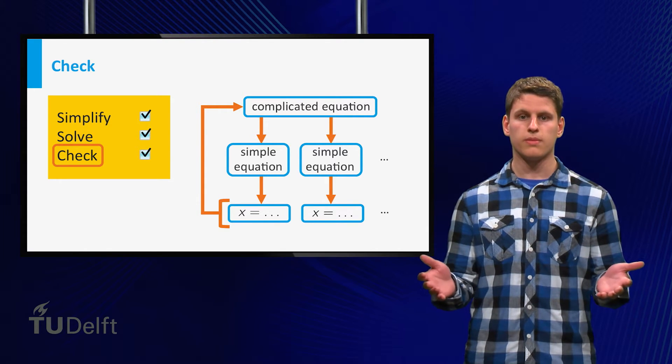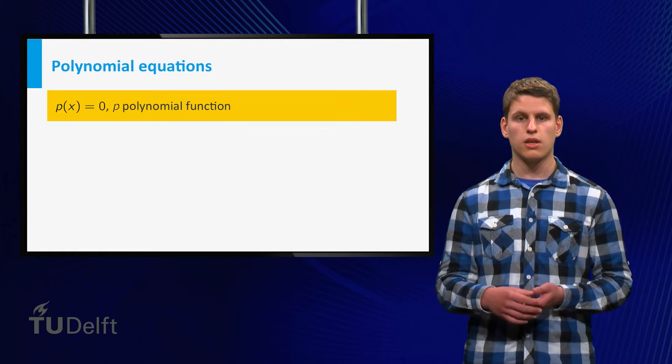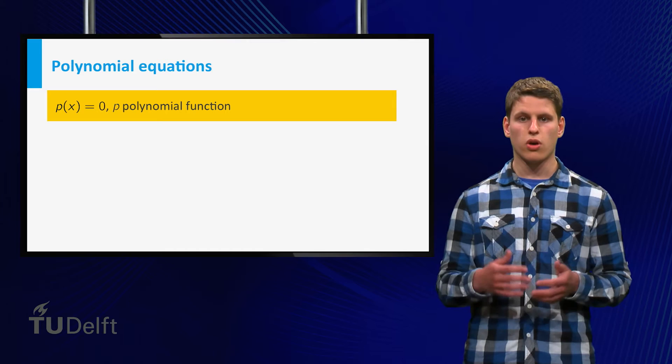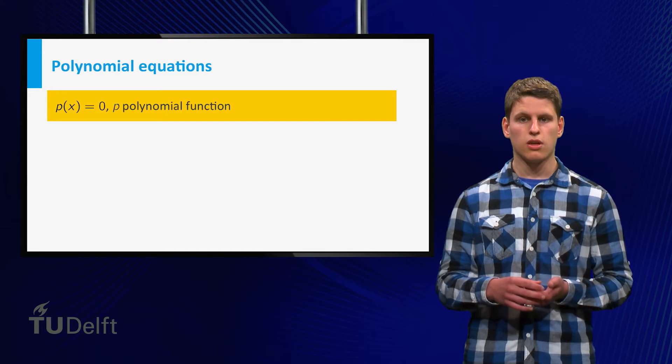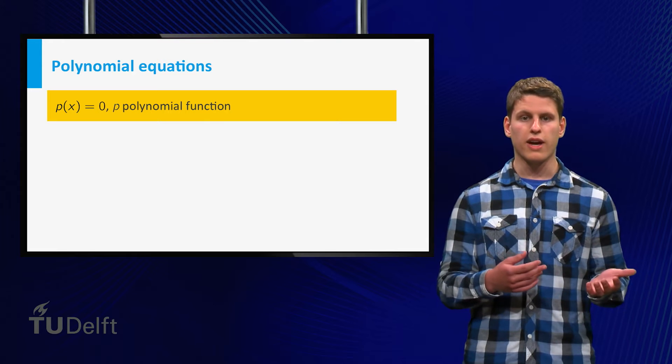This is the general story. But we also looked at specific types of equations. We started considering polynomial equations. Remember that any such equation can be written as p of x equals zero, where p of x is a polynomial function.